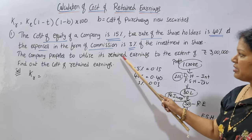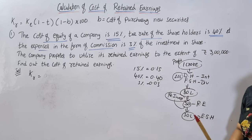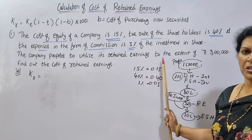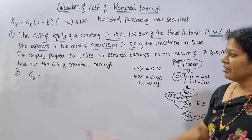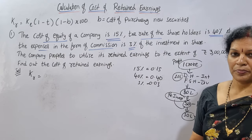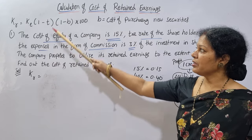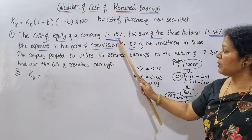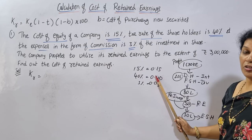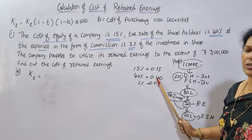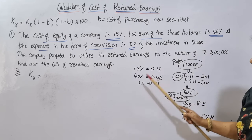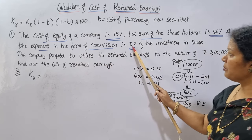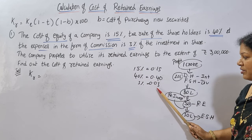The company proposes to utilize its retained earnings to the extent of Rs. 3 lakh. Find out the cost of retained earnings. The tax rate is 40%. Cost of equity is 15% — 15% is 0.15. Tax rate is 40% — 40 divided by 100 is 0.40. The commission is 3%, which is 0.03.